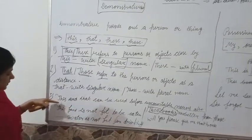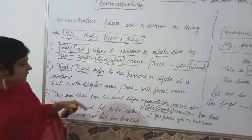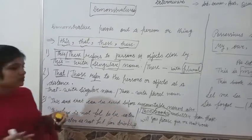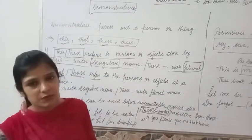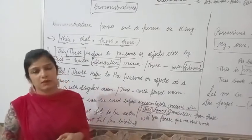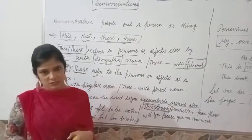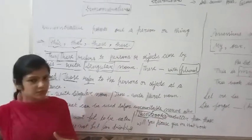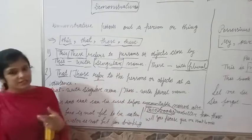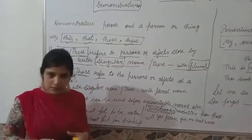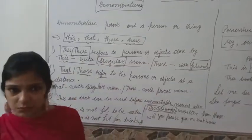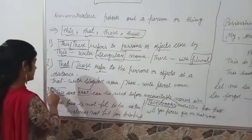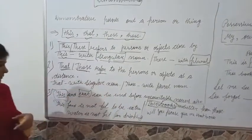The third rule is that 'this' and 'that' can be used before uncountable nouns also. Uncountable nouns are those which we cannot count — like water, air, food, milk. Before these uncountable nouns, the demonstratives 'this' and 'that' are used.